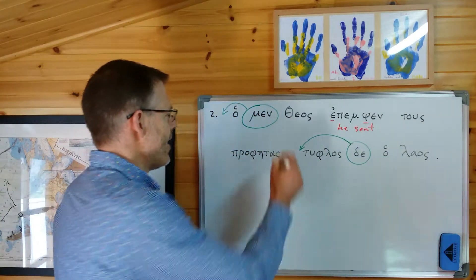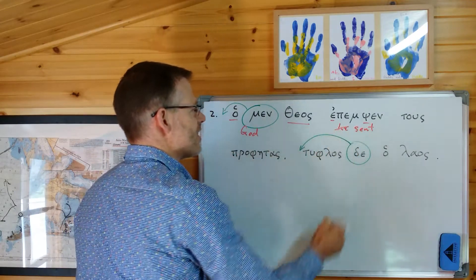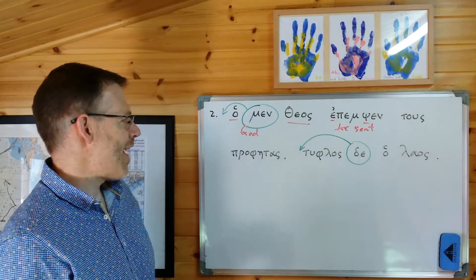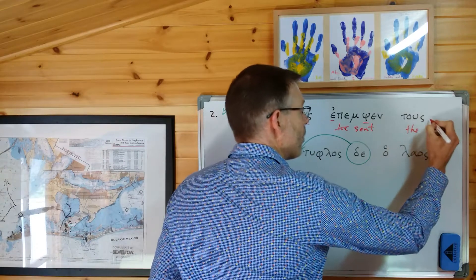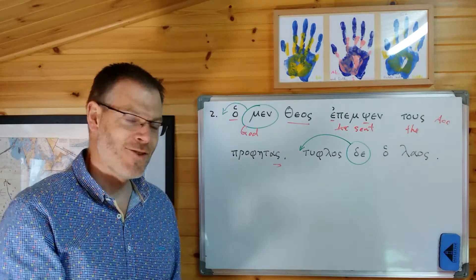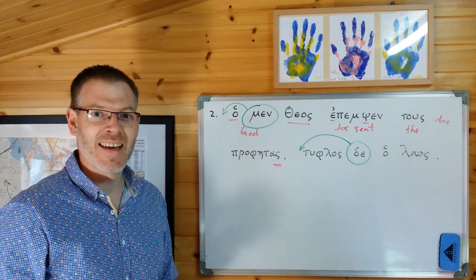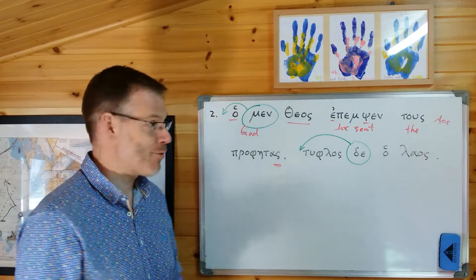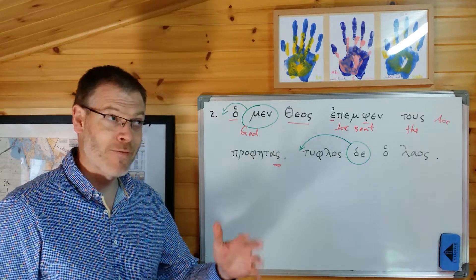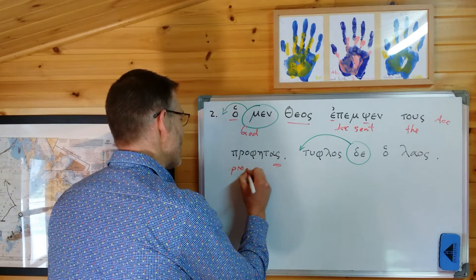Tous prophetas - masculine accusative plural. Notice that prophetas, from which we get 'prophet,' is one of those nouns of confusing gender. Go back and check from a previous section about nouns of confusing gender if you don't get that one. This comes from prophetas and it means 'prophets.' So God sent the prophets.